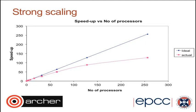You see this tail-off because when you keep the problem size fixed and increase the number of processors, the amount of work each processor is doing gets less and less. As processors do less work, you start to feel the parallel overhead — overheads in communication — and this is what causes the tail-off.